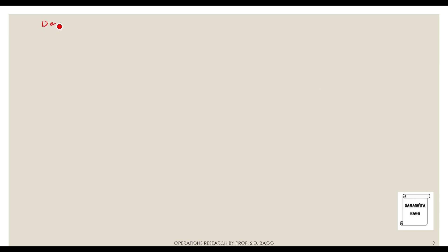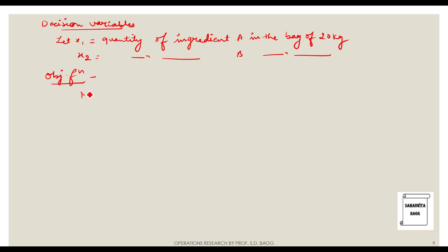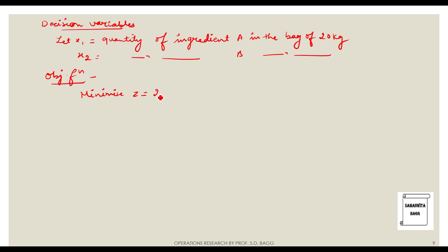We first select the decision variables. Let x1 be the quantity of ingredient A in the bag of 20 kg, and x2 be the quantity of ingredient B in the bag of 20 kg. The objective function is: minimize z = 20x1 + 16x2, since it is rupees 20 per kg for A and rupees 16 per kg for B.